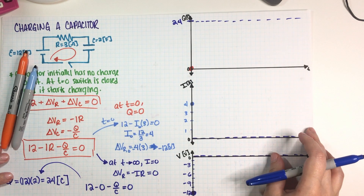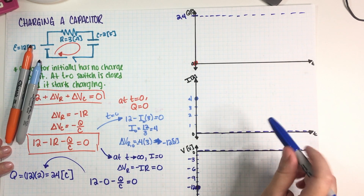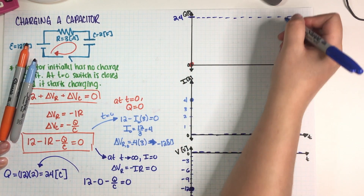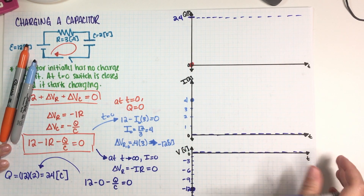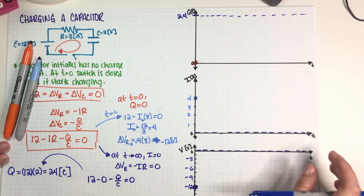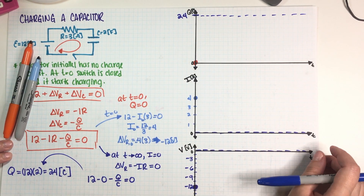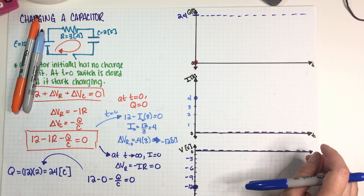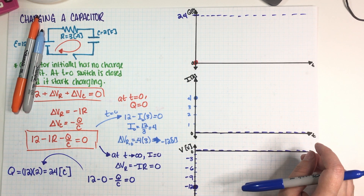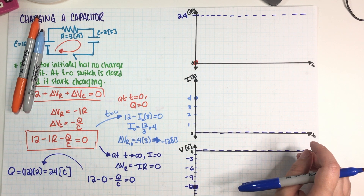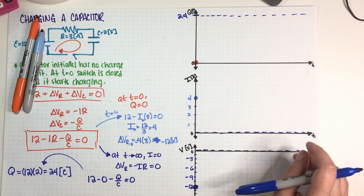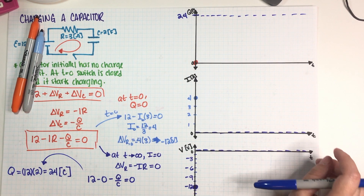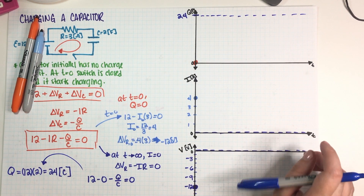So now we have initial values and final values — we know where every graph starts and where every graph ends. But remember that in order to get full credit, you also need to supply a half-life, so we need to figure out what the half-life is.